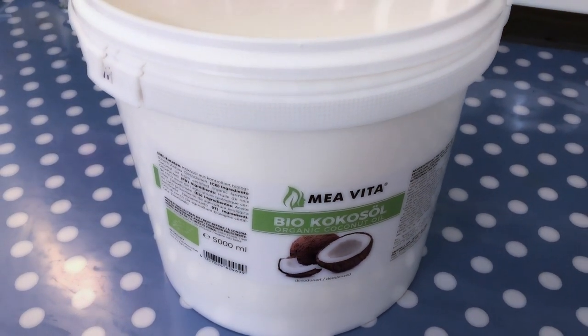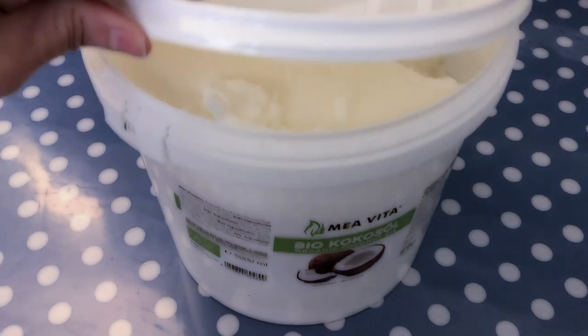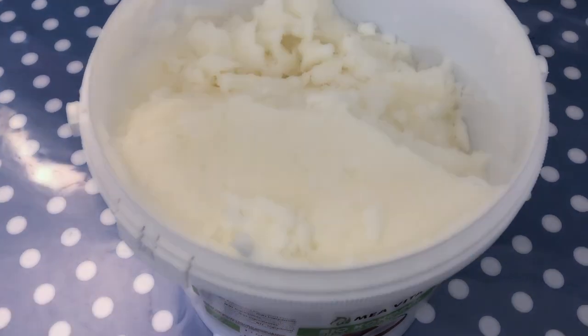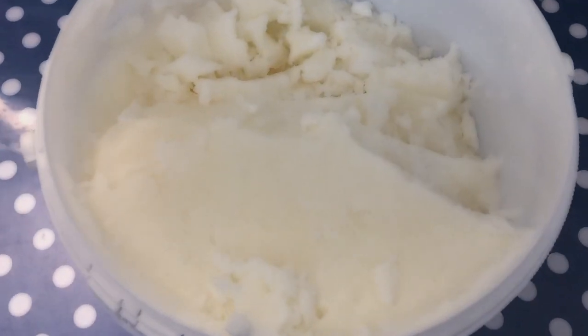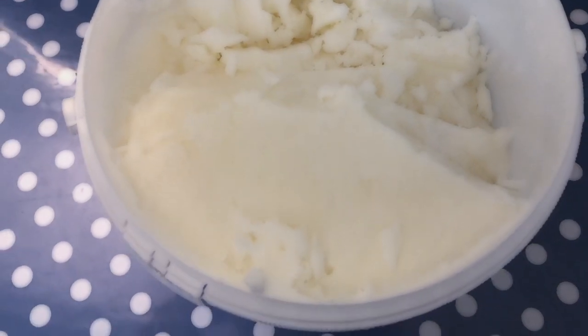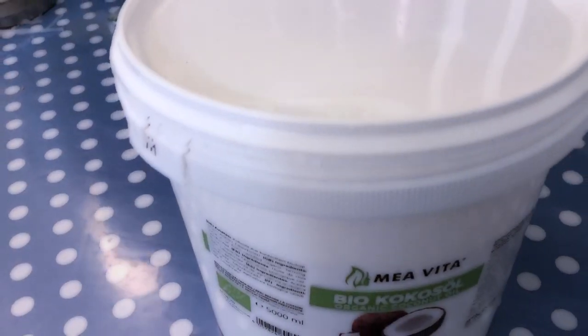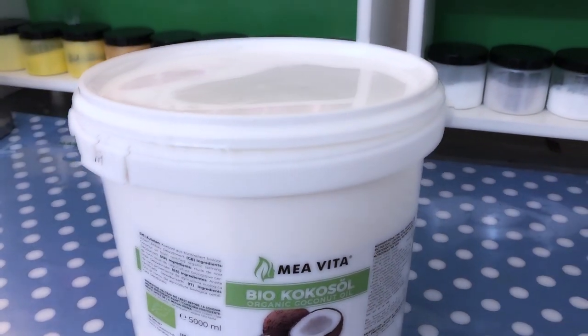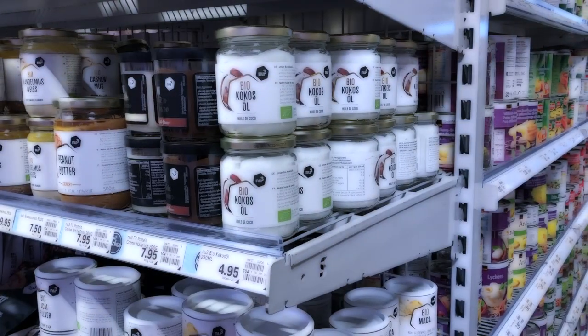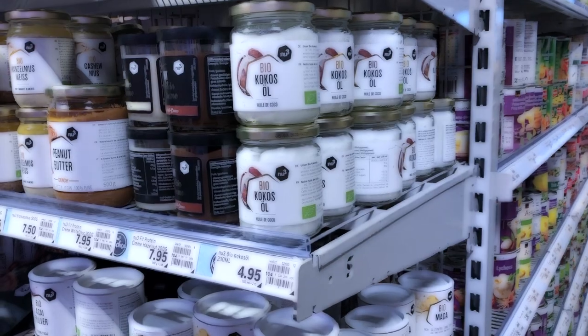The second ingredient is our fat part, which is the coconut oil. Coconut oil comes in solid form, as you can see here, unless you live in a very hot climate. It might be liquid. You can find coconut oil in every supermarket, as you can see here. You can also find it in small containers.